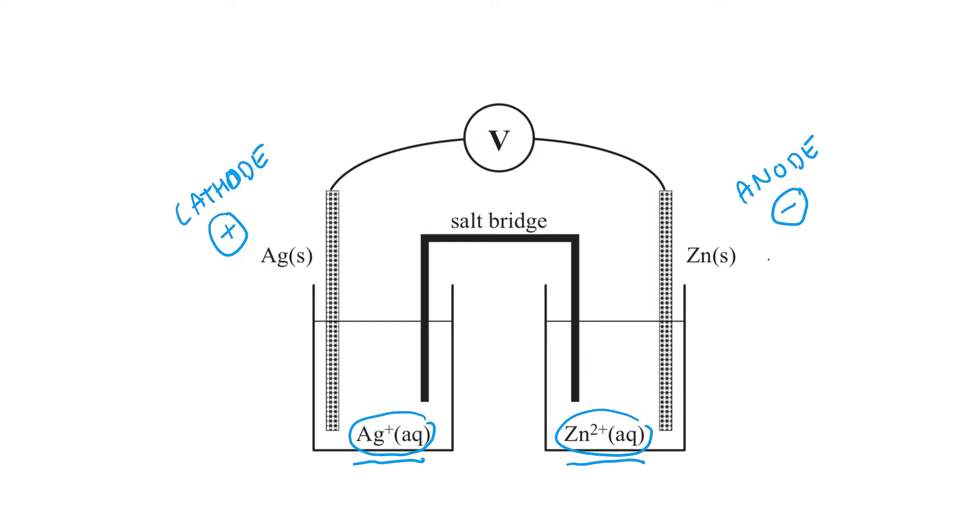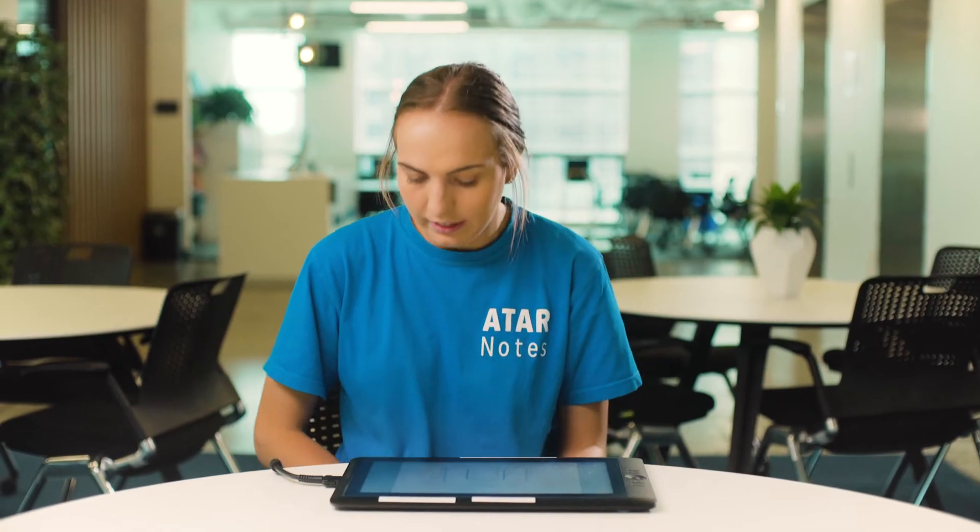In a galvanic cell, our anode is a site of oxidation. Now, you may have heard in year 11, OIL RIG. So anode is OIL and cathode is RIG. OIL stands for oxidation is loss. Therefore, oxidation is a loss of electrons.